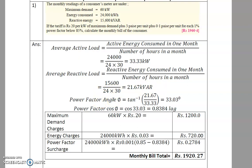The power factor angle is calculated from the power triangle: tan(φ) = Q/P, so φ = tan⁻¹(21.67 / 33.33), which gives 33.03 degrees. The power factor, cos(φ), comes to 0.8384 lagging.